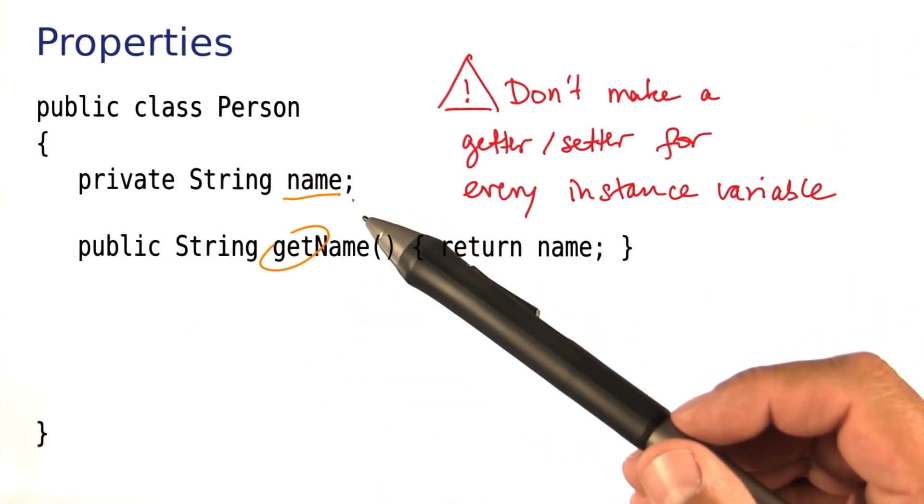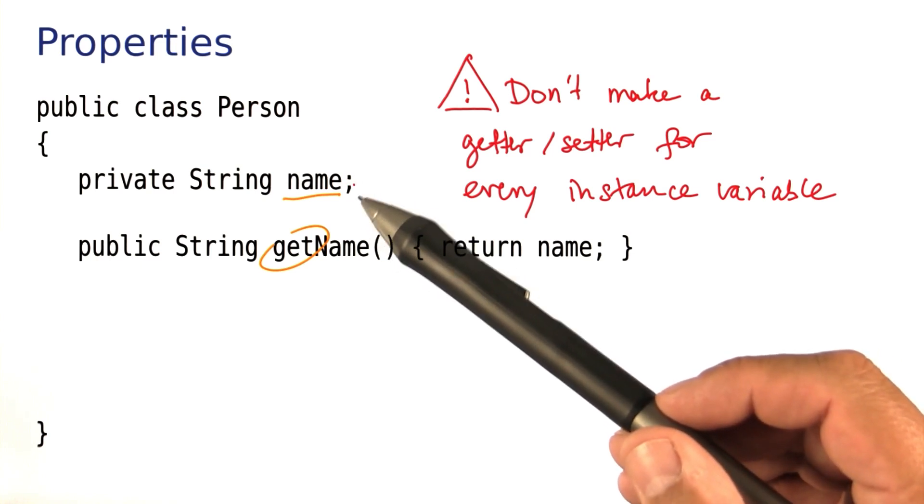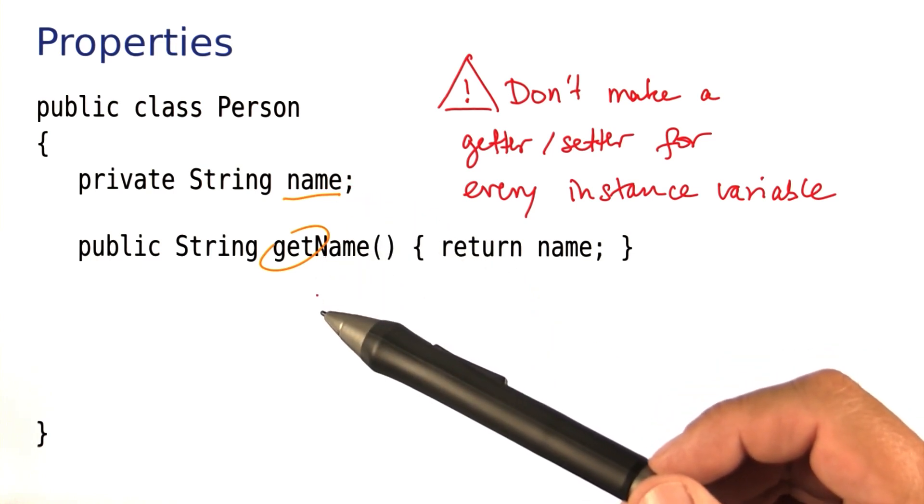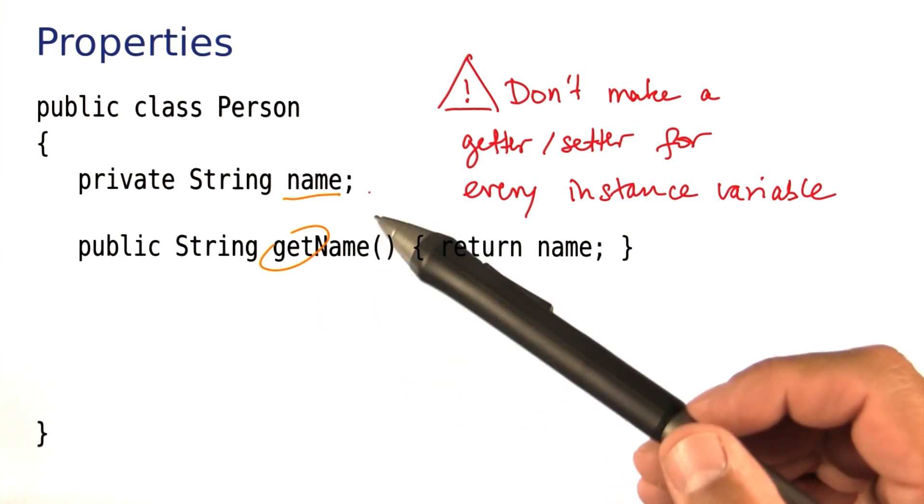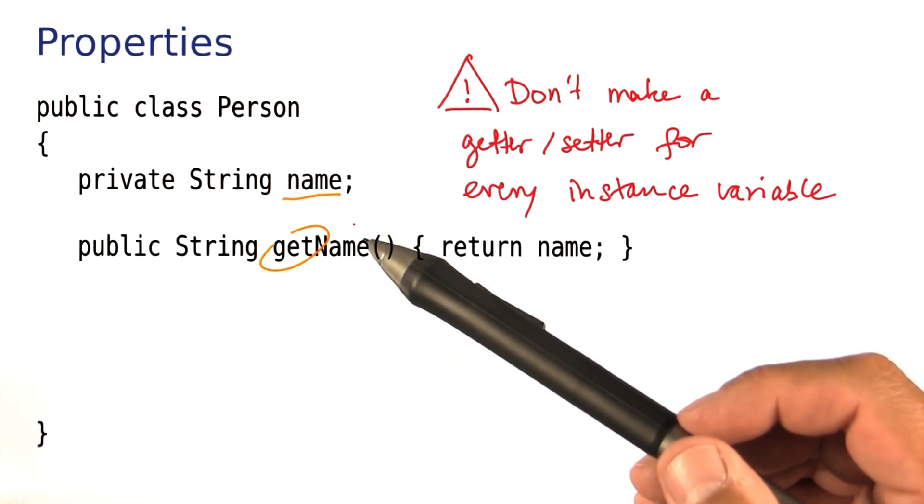Now properties, meaning private instance variables with getters and maybe setters, are very common. But that doesn't mean that you should make every instance variable a property with a getter and setter.